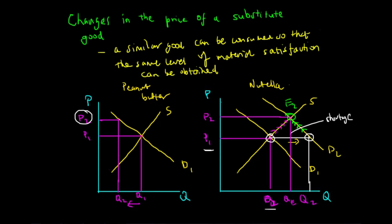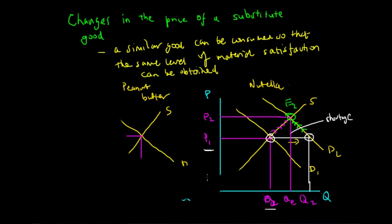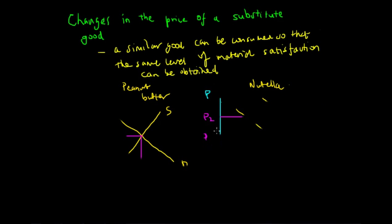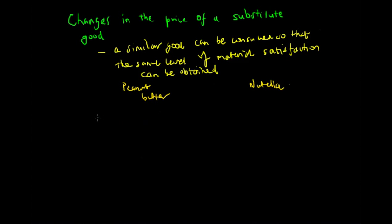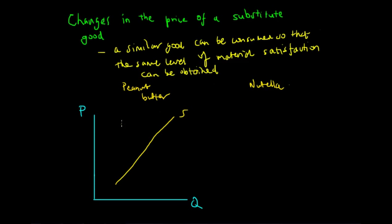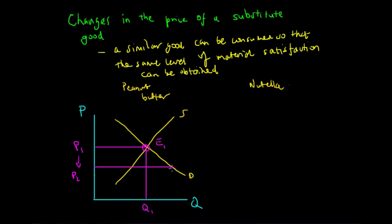Let's look at the situation where peanut butter decreases in price — a decrease in price of a substitute good. Performing the same supply and demand analysis, we have quantity on the X-axis and price on the Y-axis, an upward sloping supply curve, a downward sloping demand curve, and an equilibrium at P1 and Q1 as determined by the free market. If the price of peanut butter decreases from P1 to P2, peanut butter is now cheaper and its quantity demanded would increase to Q2. So what happens to the market for Nutella?